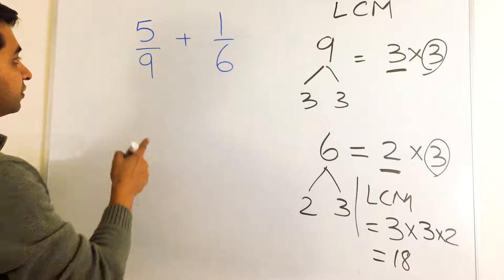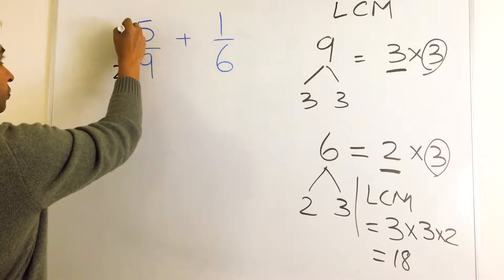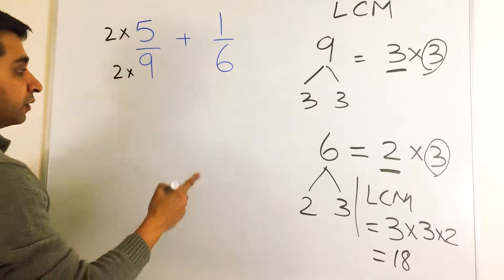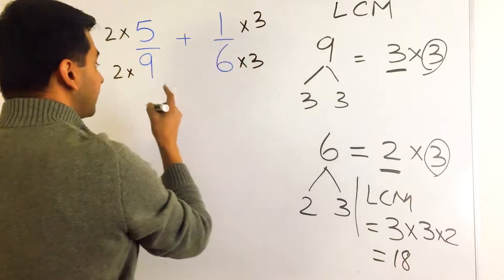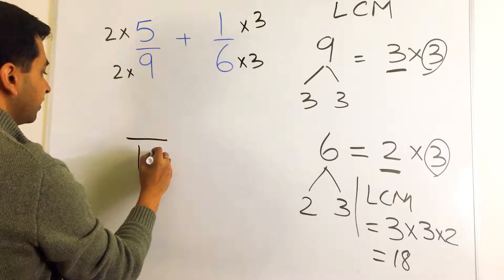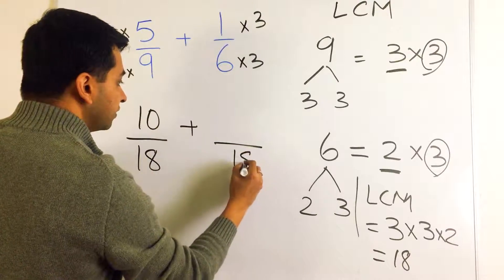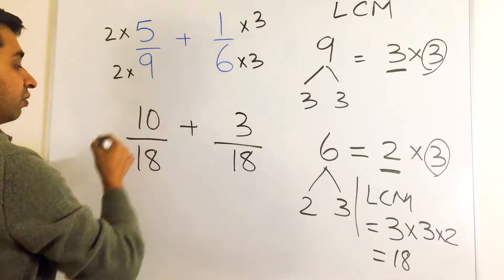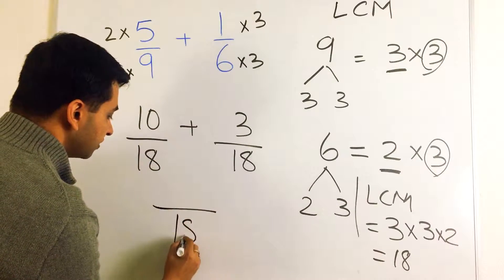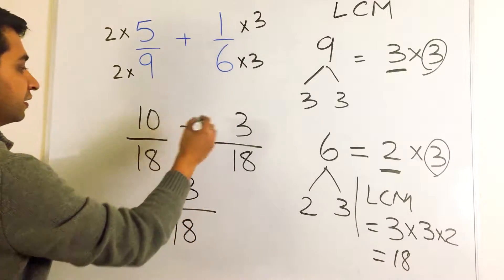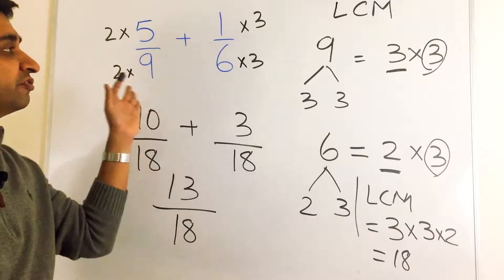Now we need to figure out what number multiplied by 9 gives us 18 — that would be 2. What we do to the bottom we do to the top. Similarly, we multiply 6 by 3 to get the LCM. That gives us a common denominator of 18 for both fractions. Now we're just adding fractions with common denominators: 18 on the bottom, and 10 plus 3 adds up to 13.